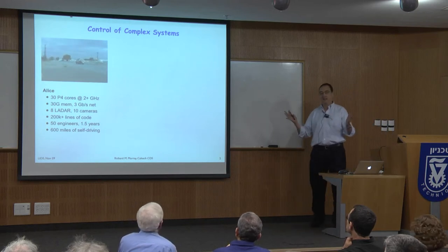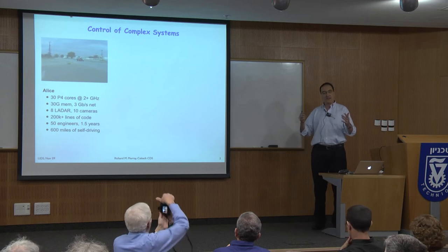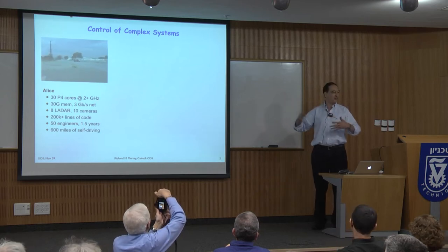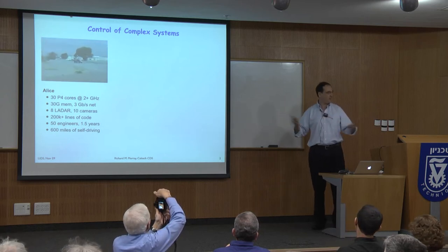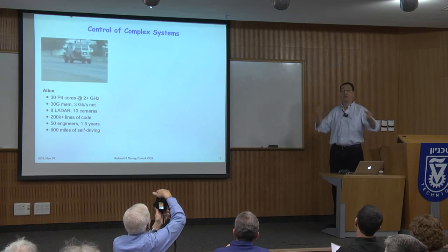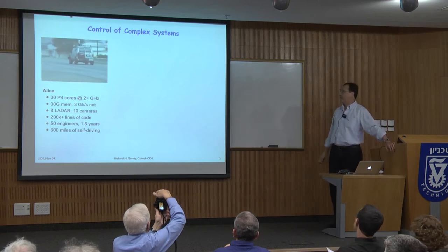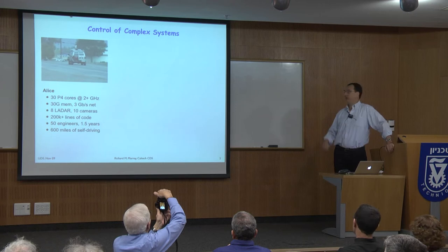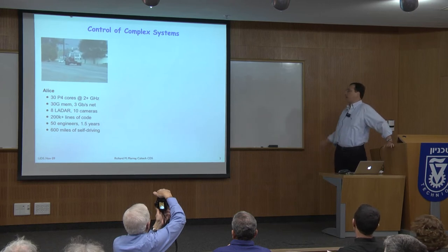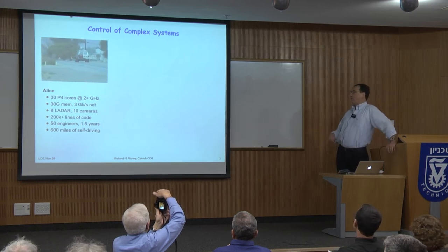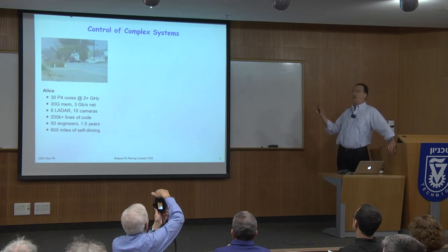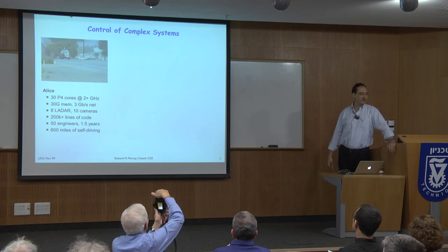The vehicle is completely autonomous. We don't tell it anything except basic information — there's a road here, going roughly in this direction, there's a stop sign — as if giving someone directions. It figures out how to drive along the road. This particular vehicle drove well over 300 miles in testing and navigated all sorts of interesting environments.